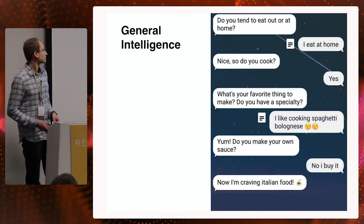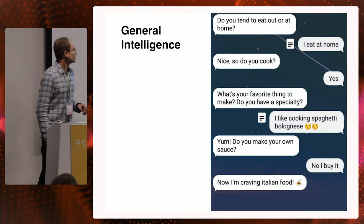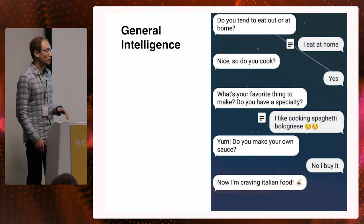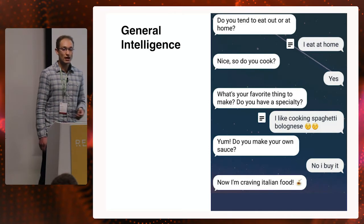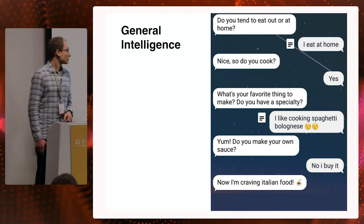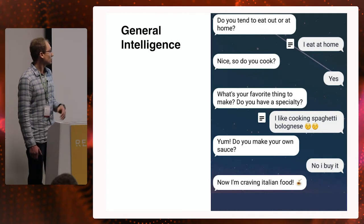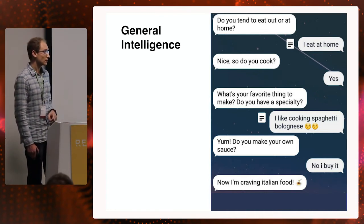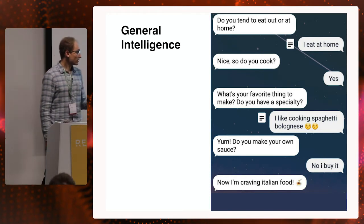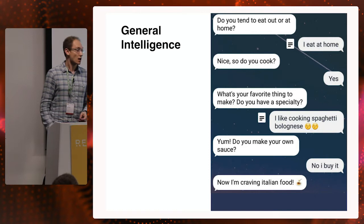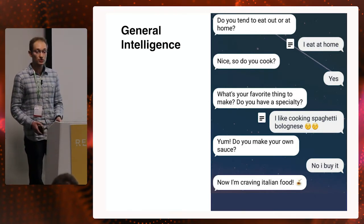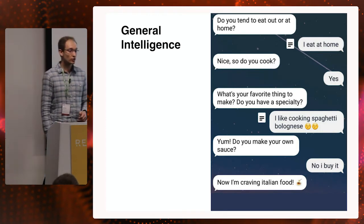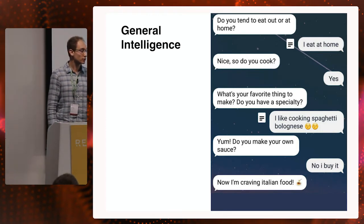Here, user and Replica are talking about food. Through the dialogue, Replica figured out that the user liked to cook and his favorite dish is spaghetti bolognese. Then Replica asked if the user makes his own sauce, and finally commented that it's craving Italian food. We can see that Replica can support conversation about food and cooking — it knows that spaghetti bolognese is Italian food and you need a sauce to cook it. Therefore, Replica demonstrates the ability to reason and has general knowledge.